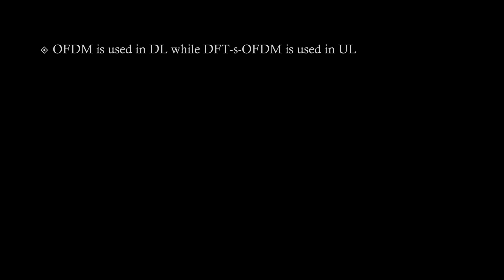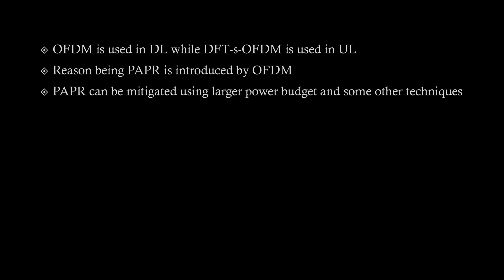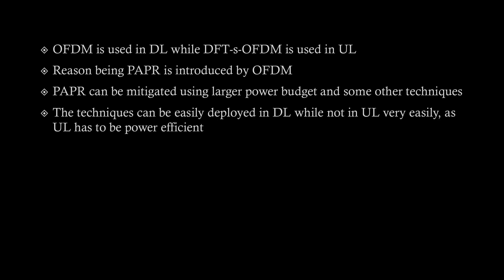OFDM is used in downlink while DFTS-OFDM is used in uplink. The reason is PAPR — peak-to-average power ratio — which is introduced by OFDM. PAPR is the main bottleneck in OFDM systems. There are many techniques for mitigating PAPR, but using a larger power budget is the most common, which can be easily deployed in downlink but not in uplink.